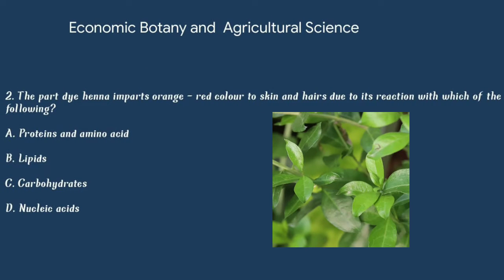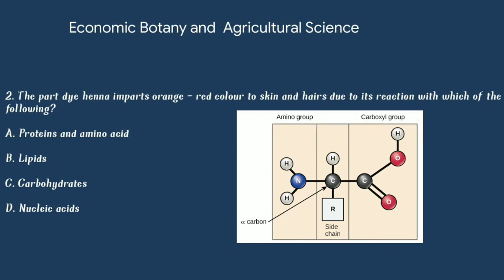Question number 2. The plant dye, henna, imparts orange-red color to skin and hair due to its reaction with which of the following? Option A: Proteins and amino acid. Option B: Lipids. Option C: Carbohydrates. Or option D: Nucleic acid. The answer is option A: Proteins and amino acid.